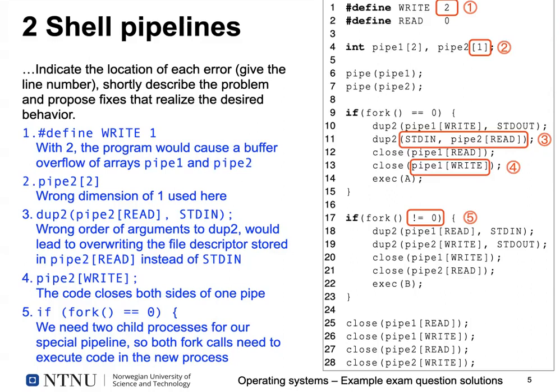Error four was the second close command: we closed both sides of one pipeline, which is obviously a problem because then one process would be unable to read or write, making any communication impossible. Error five was a bit tricky: checking if the result of fork is not equal to zero. In a shell you'd want two child processes for a pipeline, so this final check in the if statement would also have to check for equal to zero, to execute that code in the second child process instead of in the shell — otherwise the shell would terminate and never return.